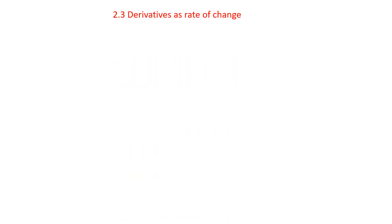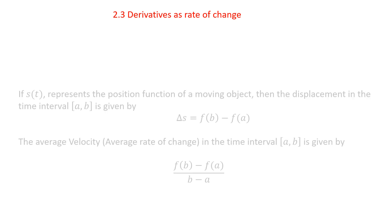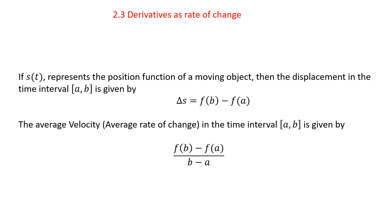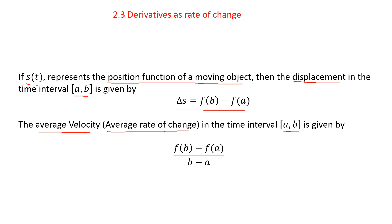In this video, we are going to talk about derivatives as rate of change. Suppose S of t represents the position function of a moving object. Then we define the displacement between the time interval [a, b] as ΔS = f(b) − f(a). The average velocity or average rate of change between the interval [a, b] is defined as f(b) − f(a) divided by b − a.